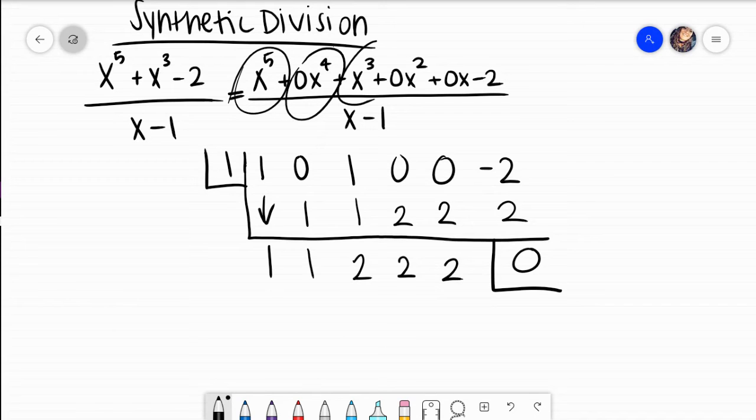I'm touching the screen, but it's not letting me do anything. In case something freezes, the answer would be x to the fourth plus x cubed plus 2x squared plus 2x plus 2.